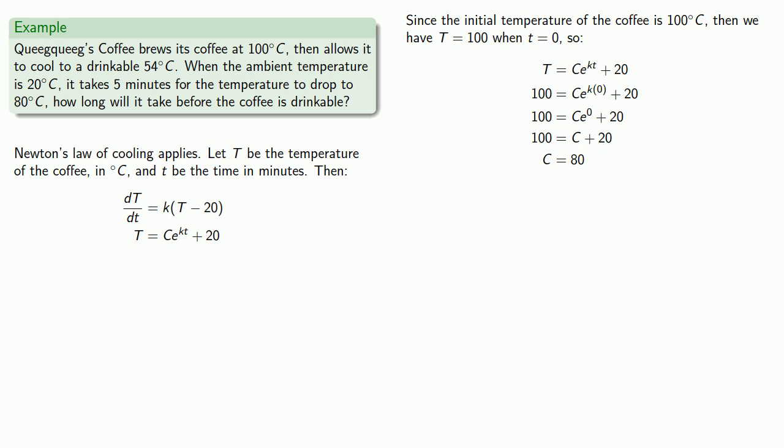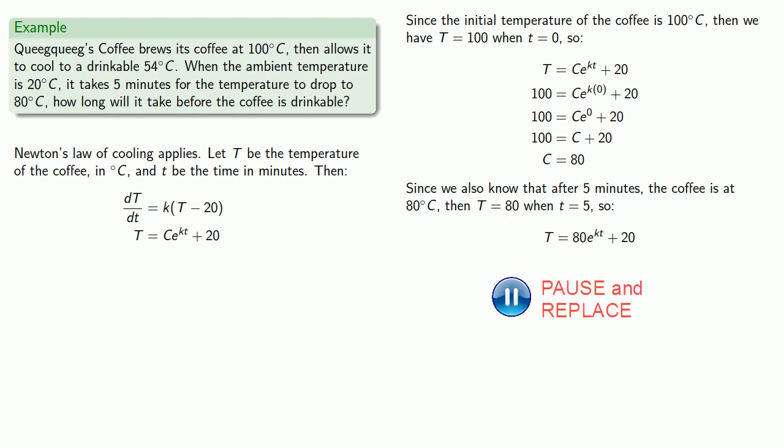Since we also know that after five minutes, the coffee is at 80 degrees Celsius, then T equals 80 when little t is equal to 5. So we can substitute those values into our formula, then solve for k. And if we reduce this to a decimal, we find that k is about negative 0.05754. And so that gives us our function.